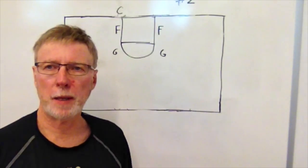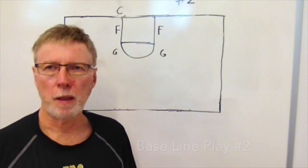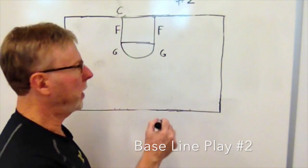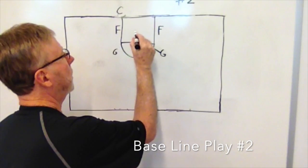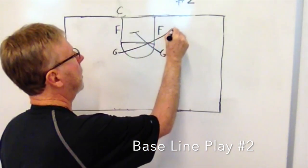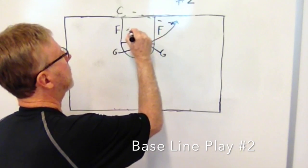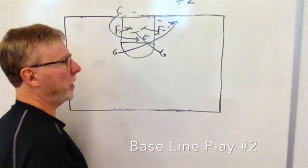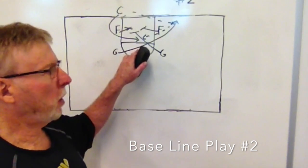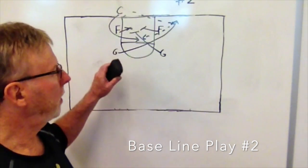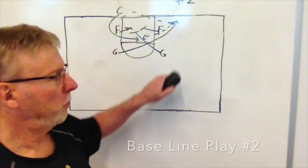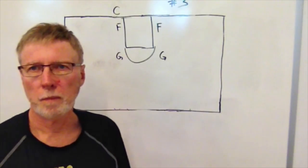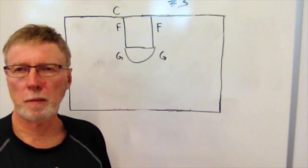On baseline out-of-bounds play number two, the center takes the ball out of bounds and slaps the ball. The guards do a crossing action, with one guard coming to receive the inbound pass. After the ball is in, one forward steps in, the other steps in, and the center comes around. We're looking for the center to get the ball for an easy shot. If not, we bring it back out and start into our offense.